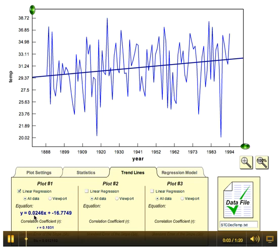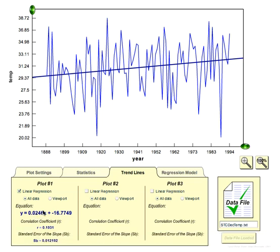Okay, so this slope here, 0.0246, is roughly twice the standard error in the slope.